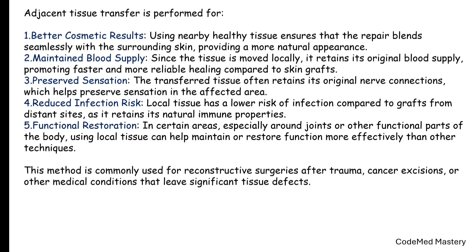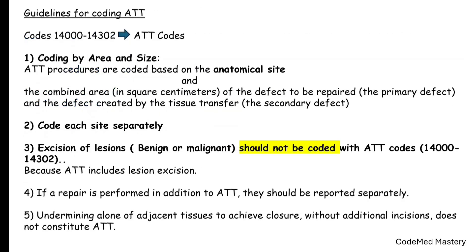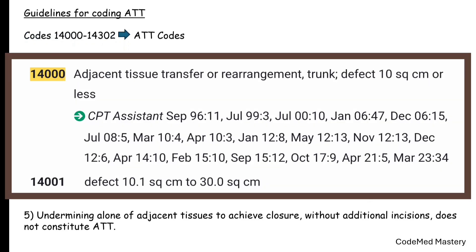Now let us move on to the important aspect: guidelines for coding adjacent tissue transfer. The codes for adjacent tissue transfer are 14000 through 14302. Code 14000 is for adjacent tissue transfer or rearrangement, defect ten square centimeters or less. Code 14001 is for defect 10.1 square centimeters to 30 square centimeters.